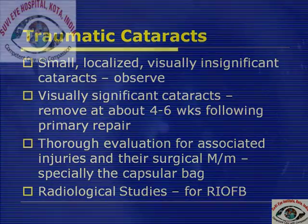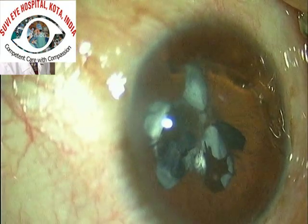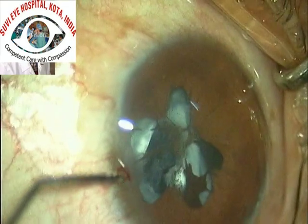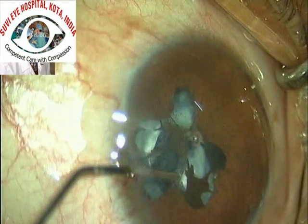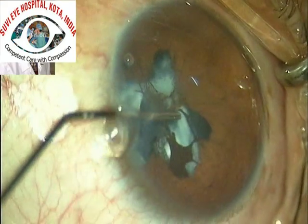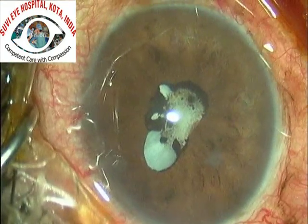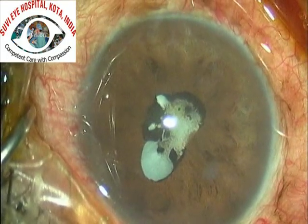If there is a small, localized, visually insignificant cataract because of a localized trauma, then it may be prudent to just observe the cataract for any progression over a period of time. However, if there is a visually significant cataract, the optimal timing to remove it is about four to six weeks following primary repair, such as corneal repair, so that inflammation has subsided by that time.